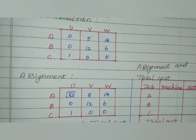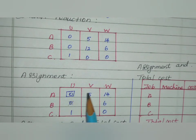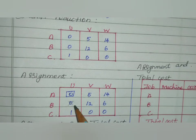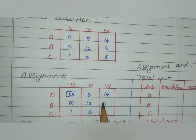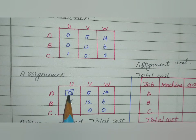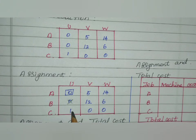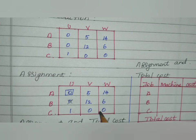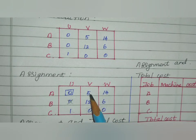We cancel this row. In the next row, we also have a zero, so we cancel that row as well. Checking the remaining rows and columns for zeros, we look at each row and column systematically, canceling rows as zeros are assigned.